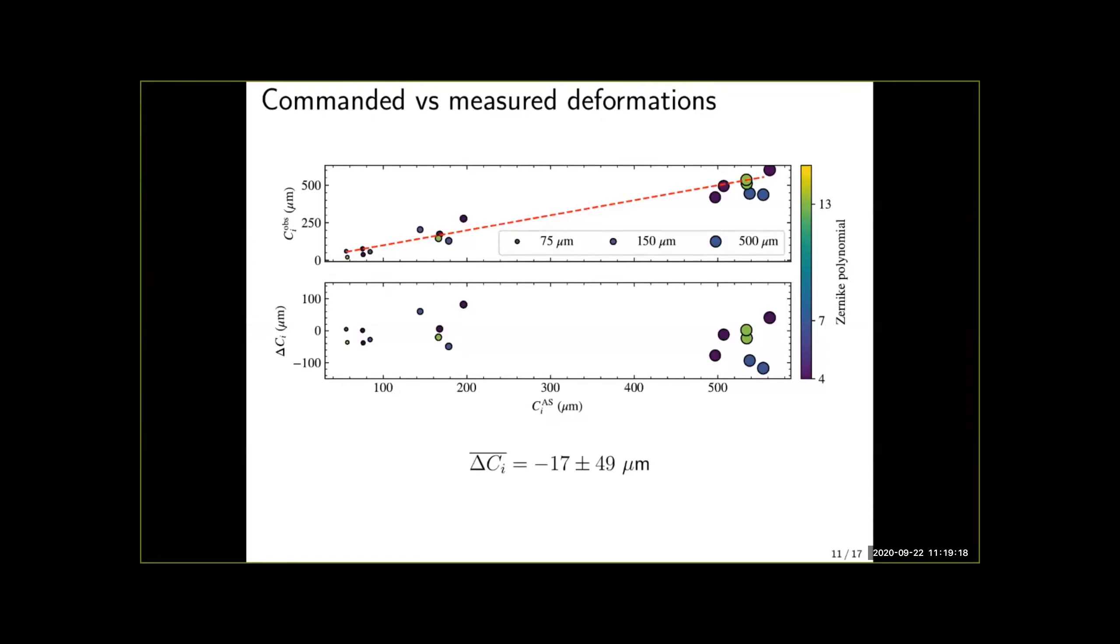We also see a red line which shows a one-to-one correlation between input deformation and the measured one. And we see that most of the points lie very close or on top of the red line meaning that we're measuring these deformations accurately enough.